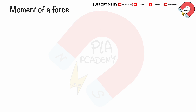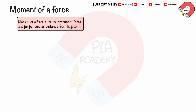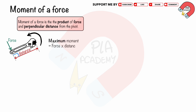The turning effect of a force is also known as the moment of a force. It is basically how much a force can make something rotate around a pivot point. The moment of a force is the product of the force and the perpendicular distance from the pivot. For example, when you use a wrench to loosen a nut, you apply a force to the end of the wrench. The longer the wrench and the harder you push, the greater the turning effect. If you apply the force at a right angle to the wrench, you get the maximum moment.